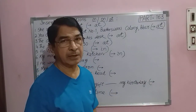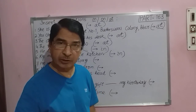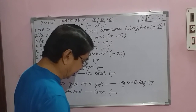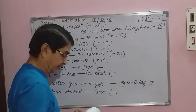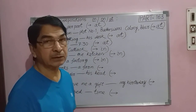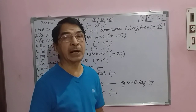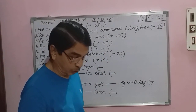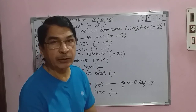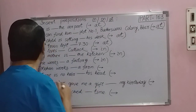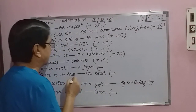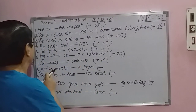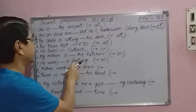Question number seven: He is working ___ a factory. The answer is IN. For places of work we use IN: he works in a bank, in a school, in a factory, in a hotel. Question number eight: Mohan works ___ a factory. Again, the answer is IN a factory, because factory is a place of work and also an enclosed place.